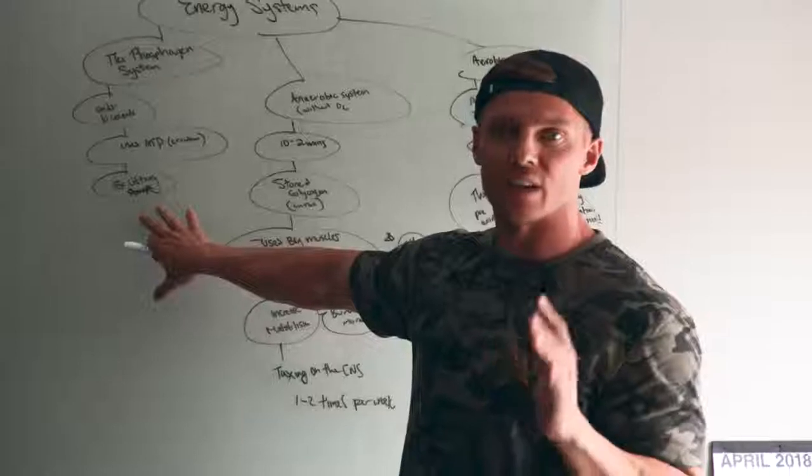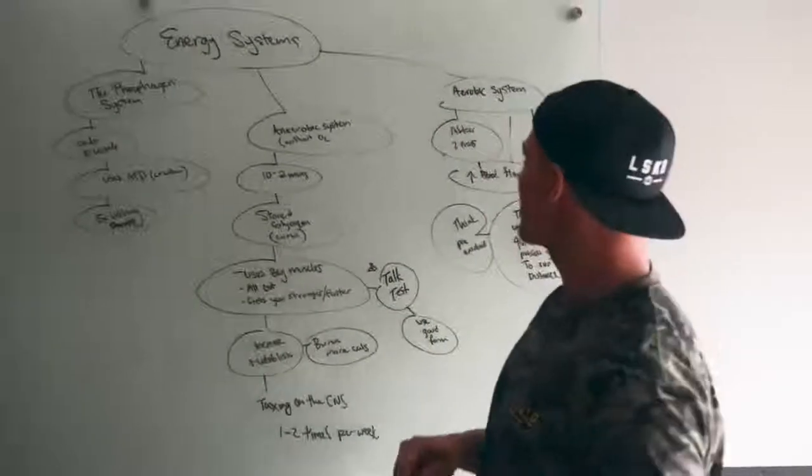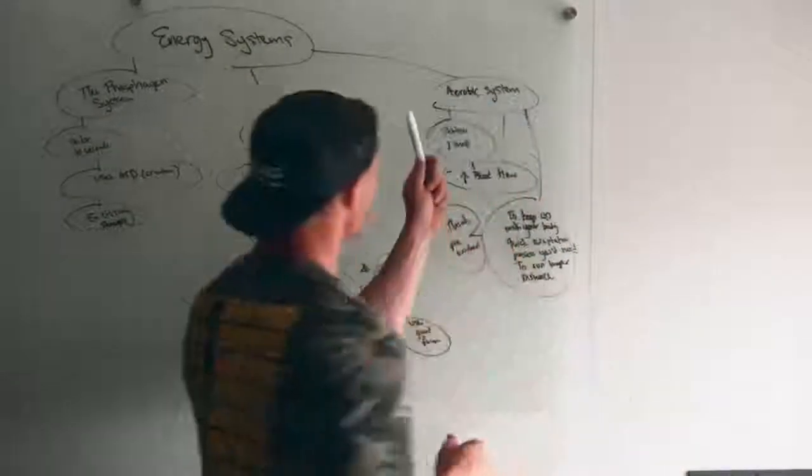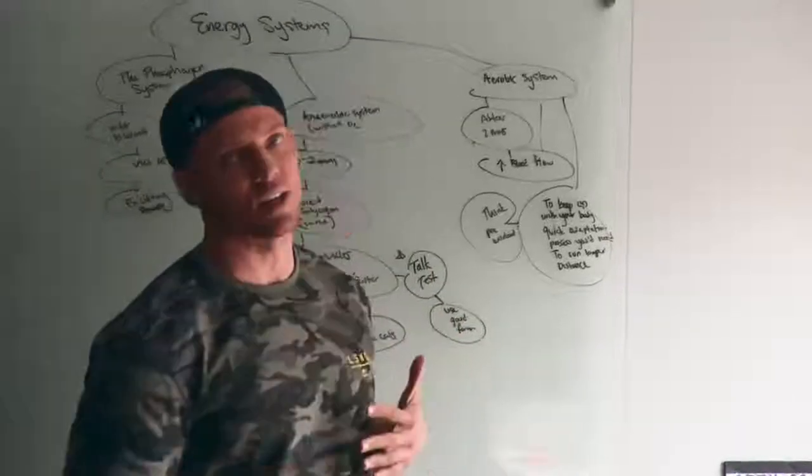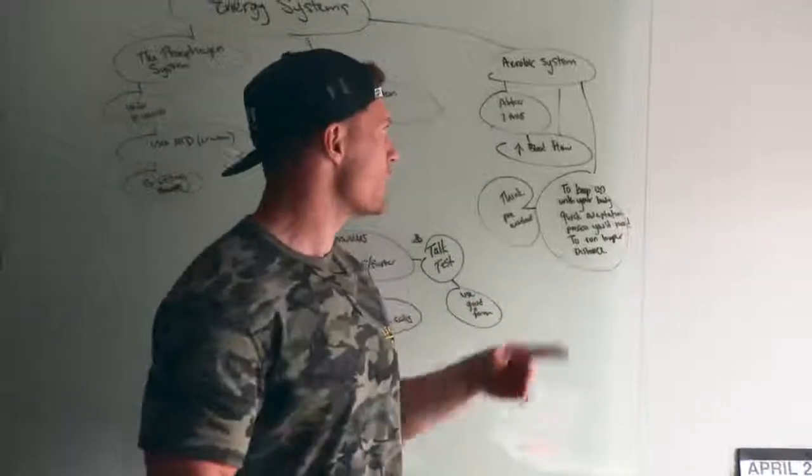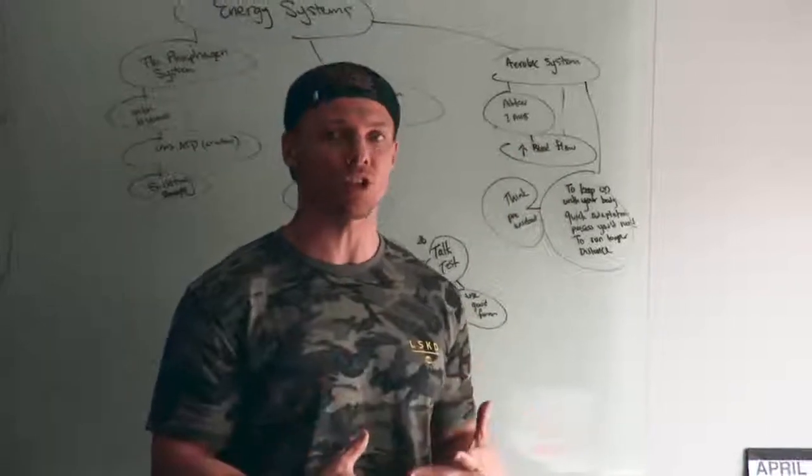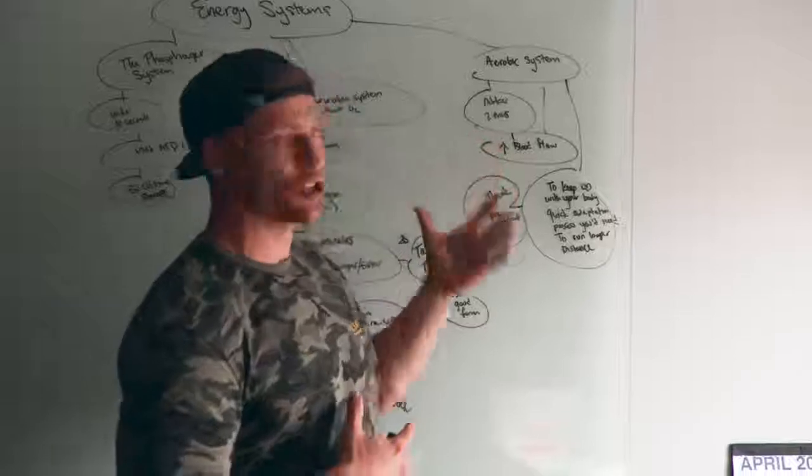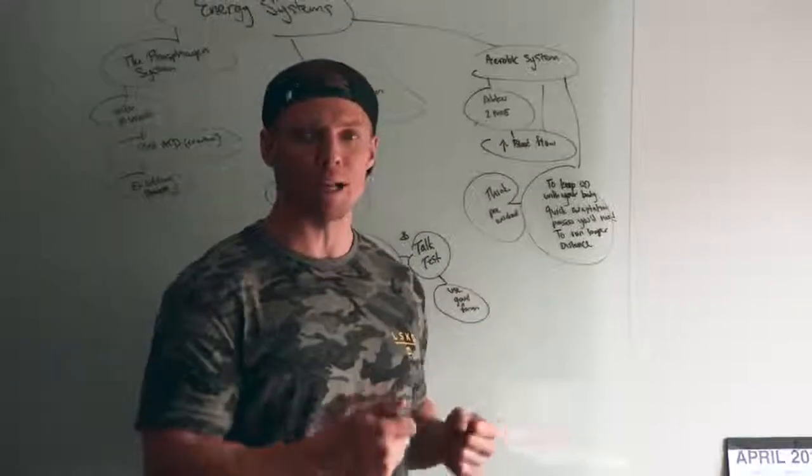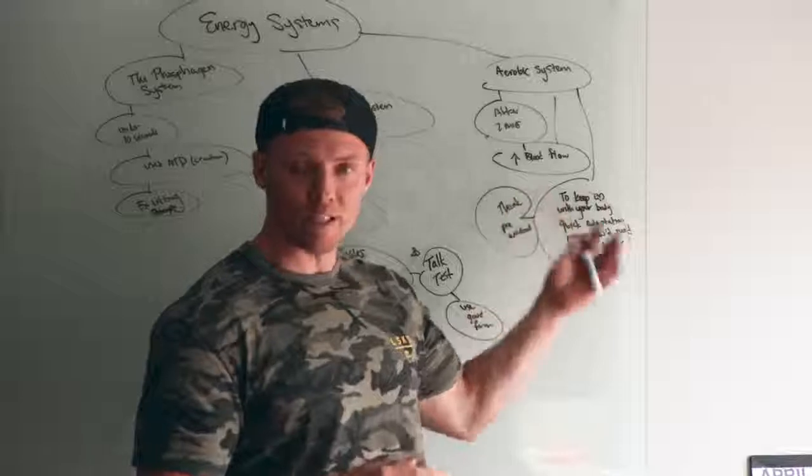The next energy system we have is the aerobic system. Aerobic system, runners, long-distance runners. Think your cardio, your extended cardio people. Aerobic means with oxygen, because that's how the system works. It uses oxygen to deliver to the muscles, to those body parts that are working.